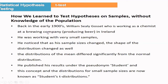His name is William Sealy Gosset, who was working in a brewing company that made beer. For the quality of the beer, the brewing process is very important and it is very costly. So they needed to work with a very small sample. Gosset was working with a very small sample and he noticed that when the samples changed, the shape of the distribution changed also, and the distribution of the mean was slightly different from the normal distribution. He got the idea about the T-distribution, but at that time it was prohibited to publish results under their own name.